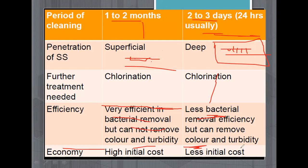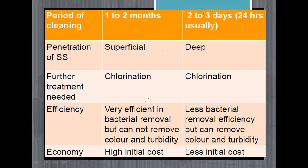Further treatment needed: in the case of the rapid sand filter, chlorination — that is, disinfection — is required for the water. Regarding efficiency, the slow sand filter is more efficient in bacterial removal but cannot remove color and turbidity. In the case of the rapid sand filter, it has less bacterial removal efficiency but it can remove color and turbidity.